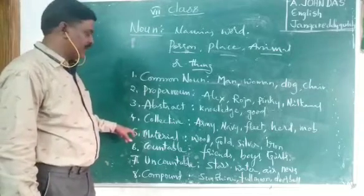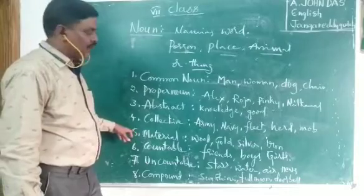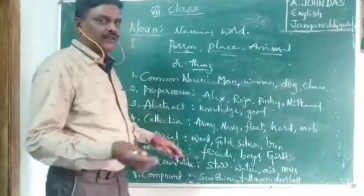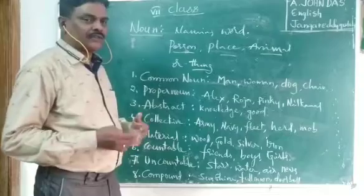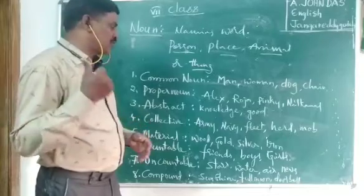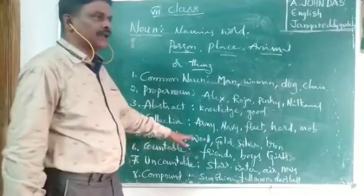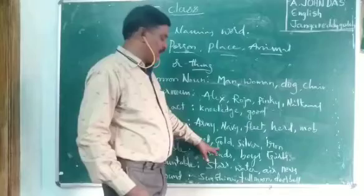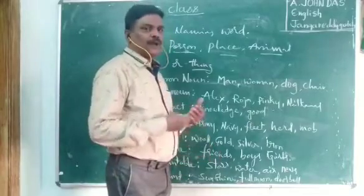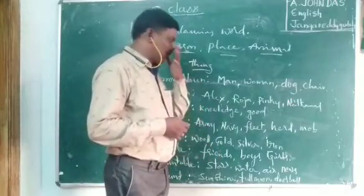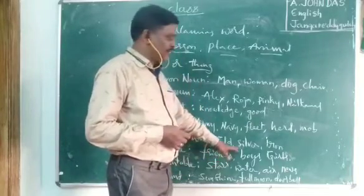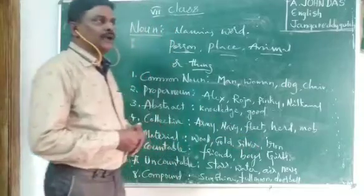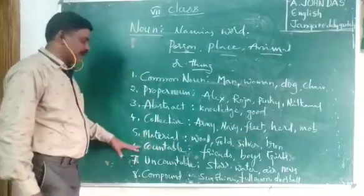Material noun is the material which is used for the preparation of things. For example, wood is the material used for the preparation of chairs, tables, doors, etc. Gold is the material used for ornaments. Silver and iron are also material nouns.